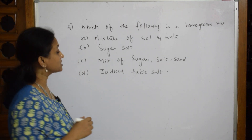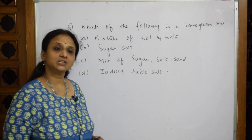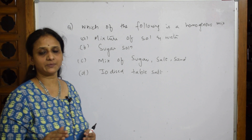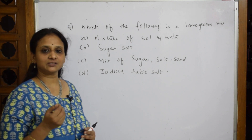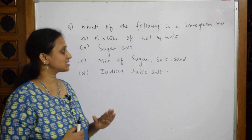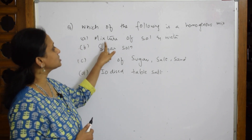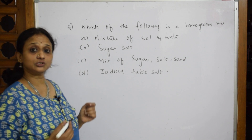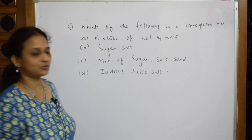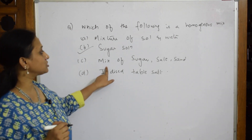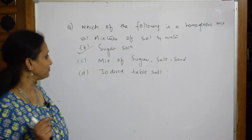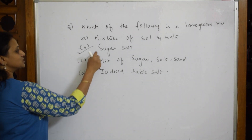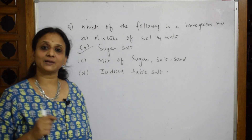Which of the following is a homogeneous mixture? A homogeneous mixture has the same composition throughout — like brass, sand, or sea water. Option A: mixture of salt and water — it shows two different combinations, so not homogeneous. Option B: sugar solution — it has the same composition throughout, so it is a homogeneous mixture. Option C: mixture of sugar, salt, and sand — that is heterogeneous. Option D: iodized salt — that is also heterogeneous. So the answer is sugar solution.